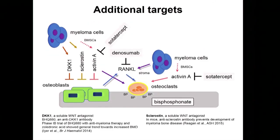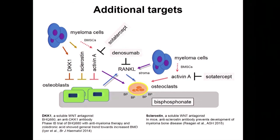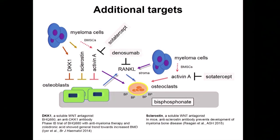These are some additional targets that I won't have a chance to discuss in detail, but they illustrate that there are additional targets we're all thinking about to tackle the problem of bone disease in multiple myeloma. In summary, we're using more imaging modalities — CT or MRI — at time of diagnosis and for follow-up, and denosumab may be a key player for how we think about treating and preventing bone disease.